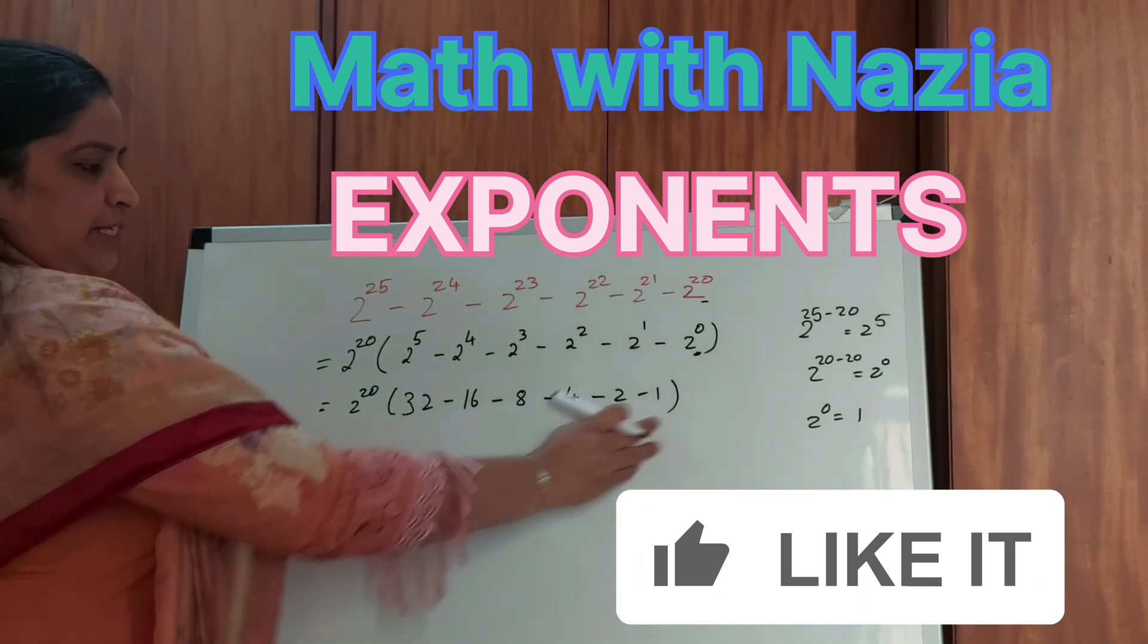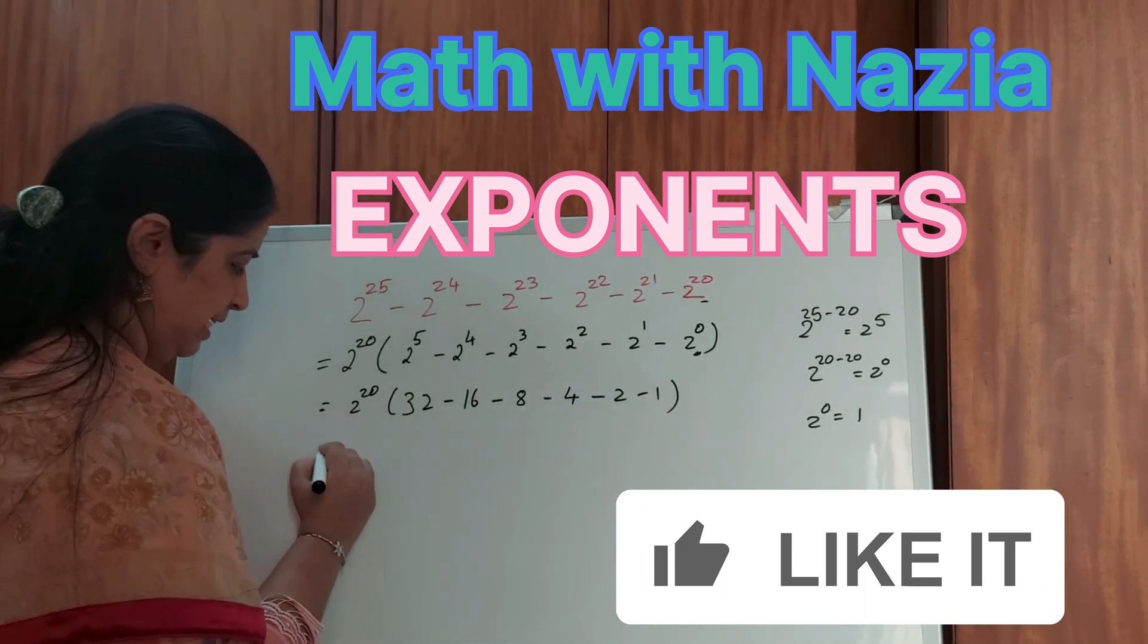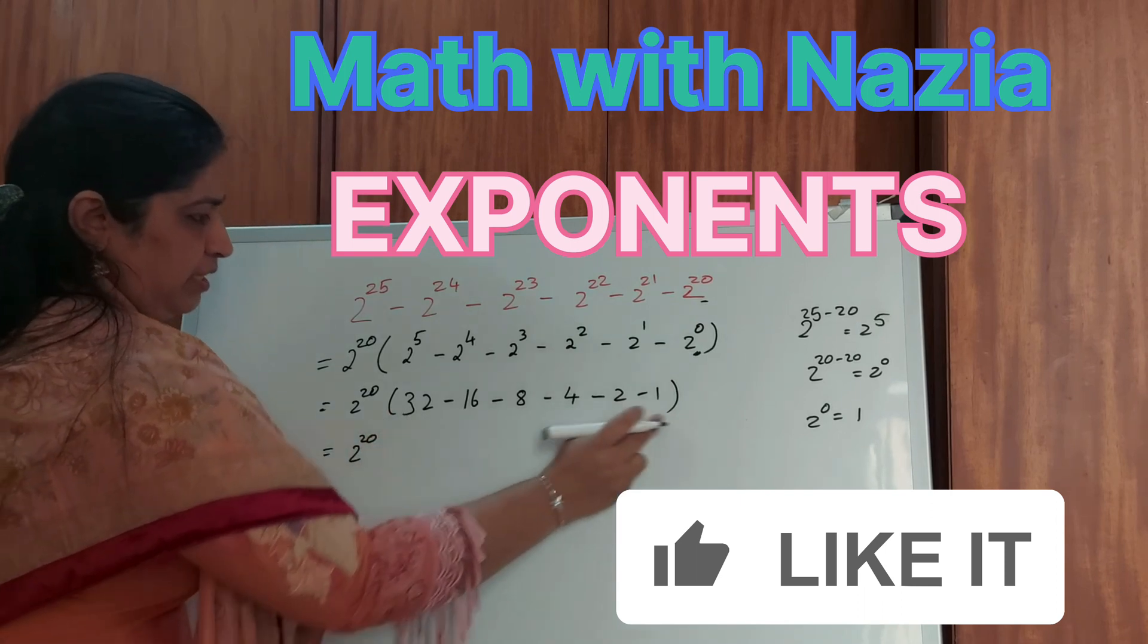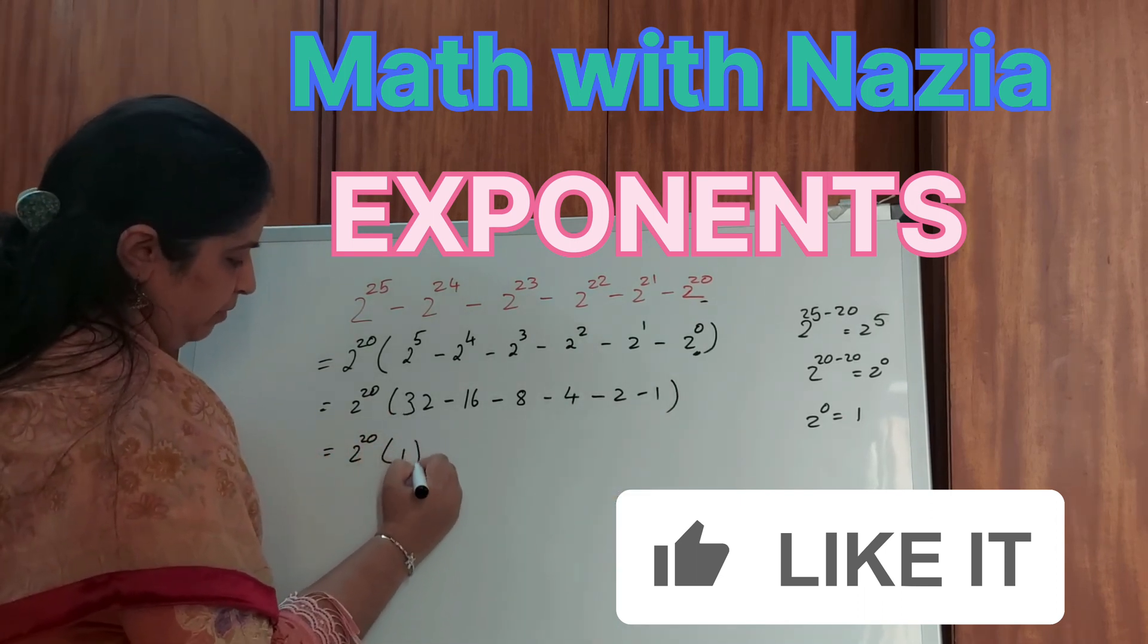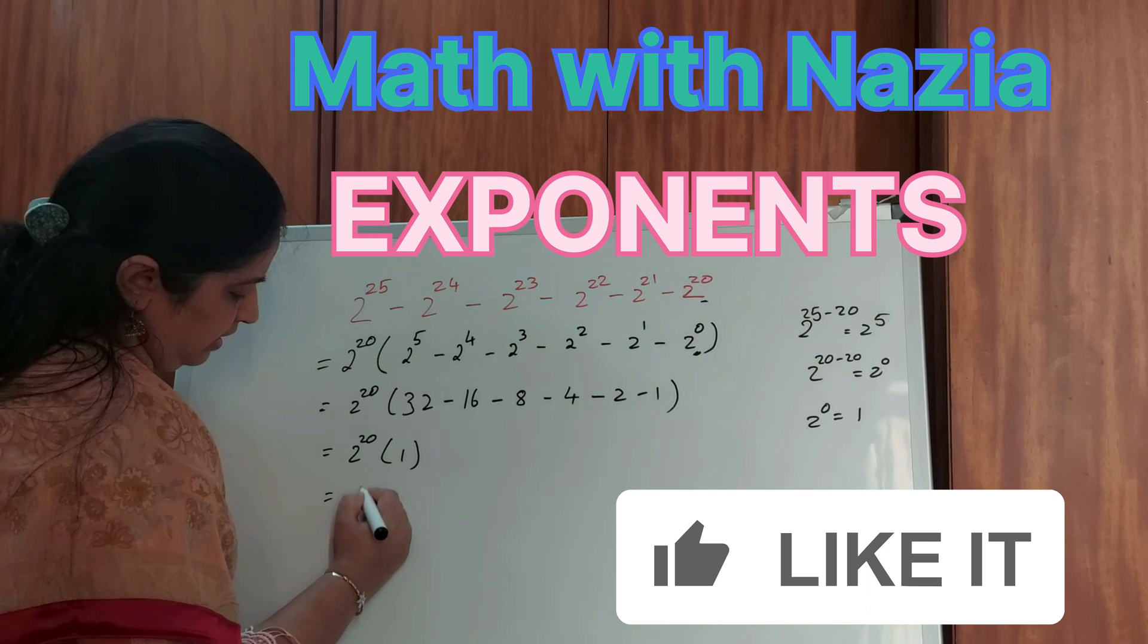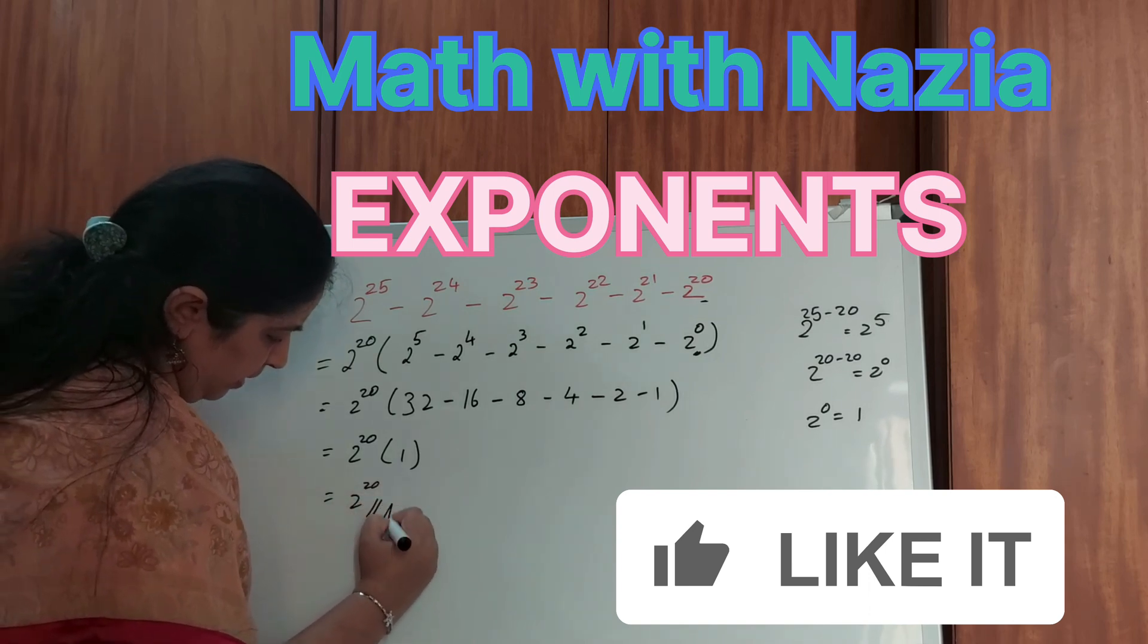Now as you could see this is very easy to solve. Let's keep this 2 to the power of 20 as such, and when you subtract all these numbers you would get a 1 here. Our final answer is 2 to the power of 20.